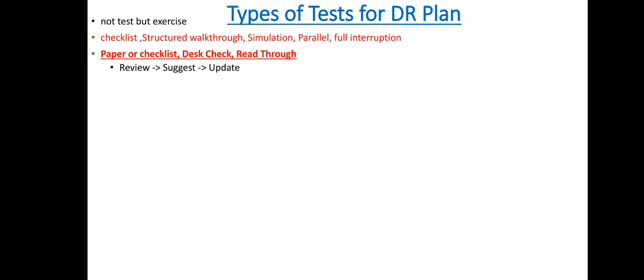The checklist test may also be called a paper test, desk test, or read-through. Copies of the disaster recovery plan are distributed to all stakeholders, such as managers of different functional departments in an organization. These stakeholders review the plan and offer suggestions to the disaster recovery team to update it, and their suggestions are incorporated. In this way, we obtain the opinions of different stakeholders.